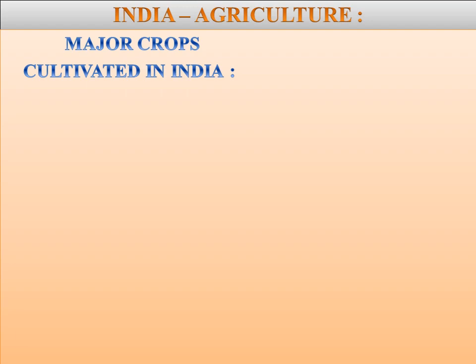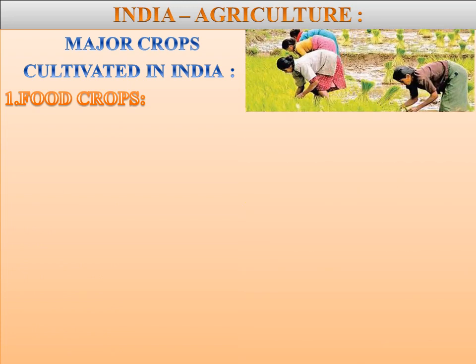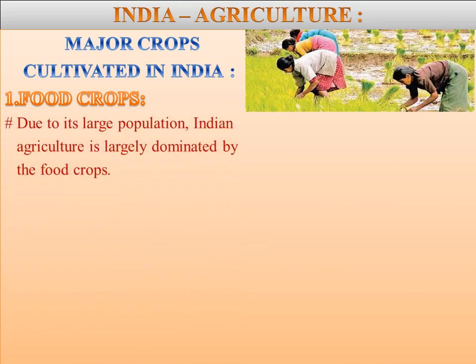Next, plantation crops: tea, coffee, and rubber, etc. And horticultural crops: fruits, flowers, and vegetables. Today I want to explain food crops. Due to its large population, Indian agriculture is largely dominated by food crops. Now in food crops I want to explain the first one, which is rice.